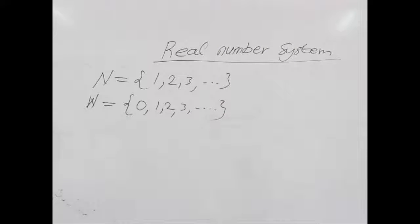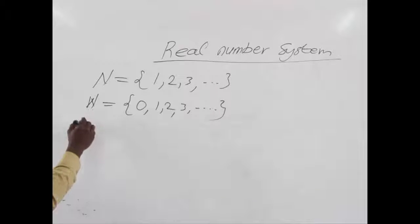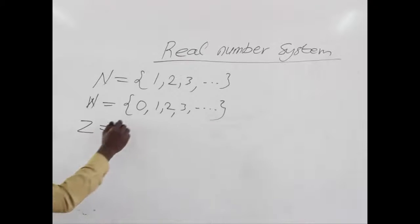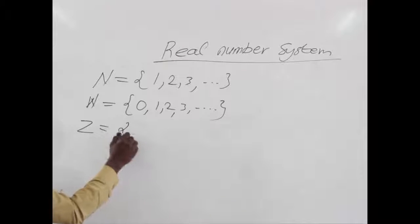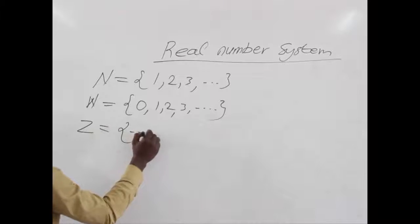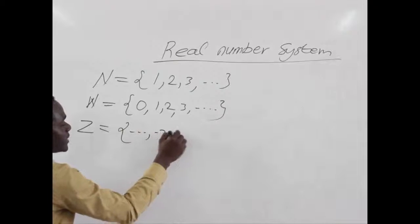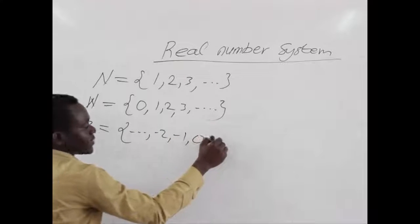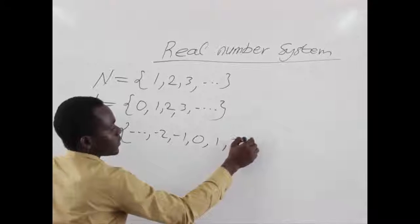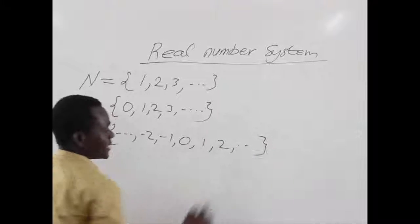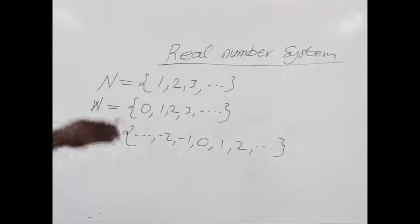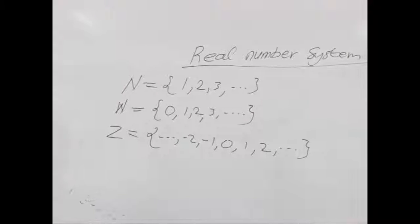We also have another bigger set which is integers, denoted by Z. For integers we have both negative numbers and positive numbers, and we move from negative infinity towards positive infinity.